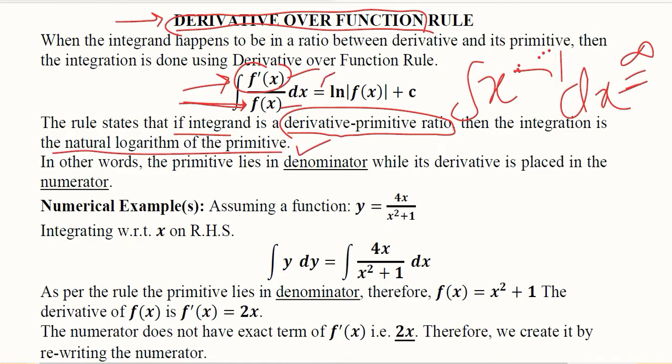And you can see the natural log of the primitive, which is f(x) plus c, definitely is there as the constant of integration. In other words, the primitive lies in the denominator while the derivative is placed in the numerator. You can put it in these words as well: in terms of denominator and numerator, the derivative and the primitive respectively.